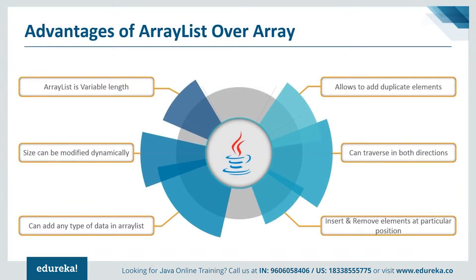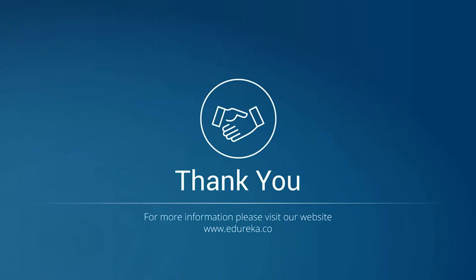Now let's cover the advantages of ArrayList over arrays. First, ArrayList is variable length — arrays are fixed length and cannot be resized once created, but ArrayList can grow and shrink dynamically. The size is modified automatically when elements are added or removed. You can add any type of data and it also allows duplicate elements. Finally, you can traverse an ArrayList in both forward and backward directions using ListIterator, and it allows insertion and removal of elements at a particular position. I hope you understood the concept of ArrayList and the difference between Array and ArrayList. That's all for the session — thank you and have a nice day.